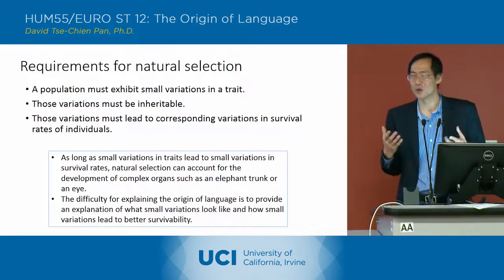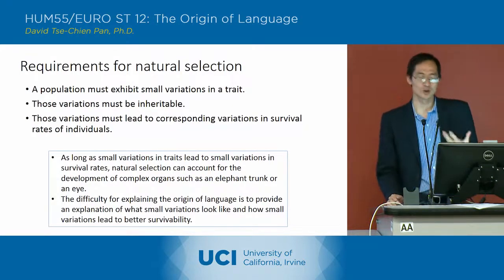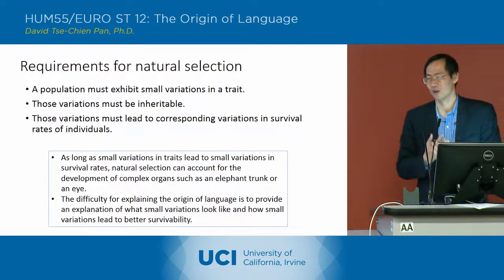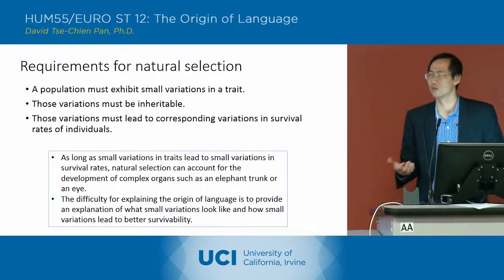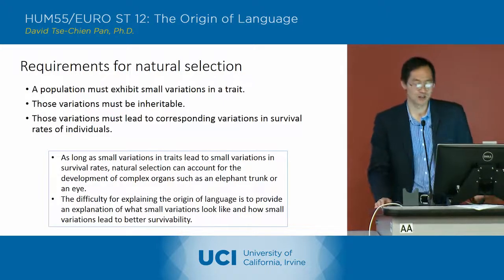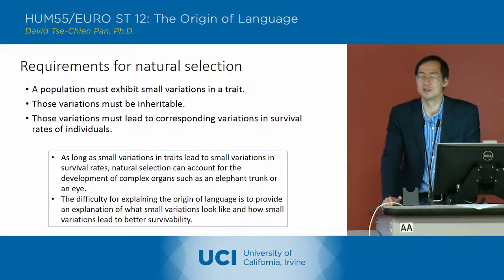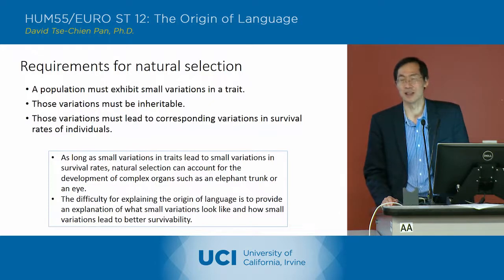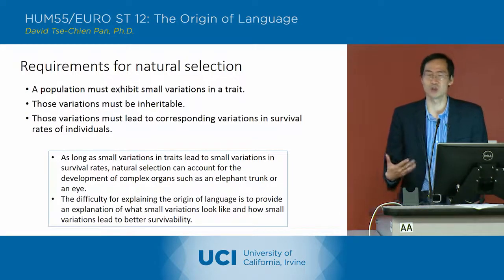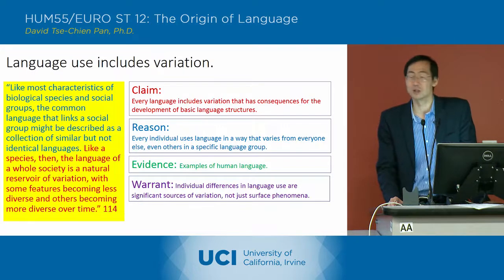Let me remind you of the prerequisites for natural selection — this is from a previous lecture. You can only have natural selection if three criteria are fulfilled. First, there have to be small variations in a population. Those variations have to be inheritable. And finally, those variations have to lead to corresponding variations in the survival rates of individuals with a particular variation over another. Deacon argues that language fulfills all of these requirements for natural selection, even though language is not a typical biological organism. The first point is that language includes lots of variation — every individual uses language in a way that varies from everybody else.